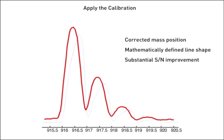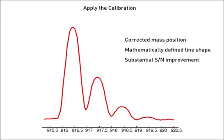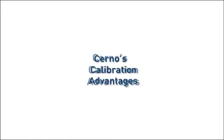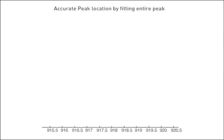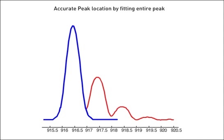The improvement in signal-to-noise is actually not an intent of the calibration, but it is a welcome by-product. Since we now have a known calibrated line shape, many data analysis steps can be dramatically improved and greatly simplified. For example, the previously described issues concerning peak picking with classical calibration approaches are entirely resolved. Since we have calibrated the spectrum to a mathematically defined line shape function, we can now locate any peak by fitting it against the exact mathematical function we calibrated with. This is a far superior approach because it uses all the information in the peak, not just a few points, to give a very accurate estimate of the true peak position. This is one of the reasons that MassWorks provides high mass accuracy, even on unit mass resolution data.